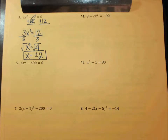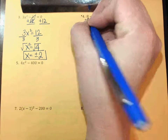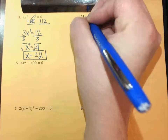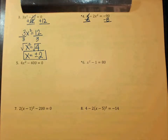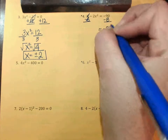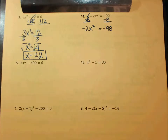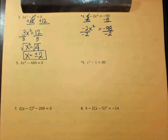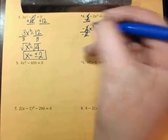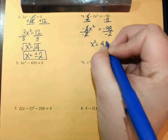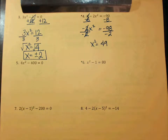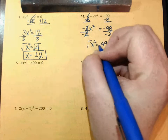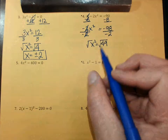Next one, look at number 4. What would I do first? Minus 8. What is negative 90 minus 8 more? So I have negative 98 on this side and negative 2X squared on this side. Make sure that you carry down that negative in front of the 2. What would I do next? Divide by negative 2. What is negative 98 divided by negative 2? 49. Next step — square root. Square root of 49? Plus or minus 7.